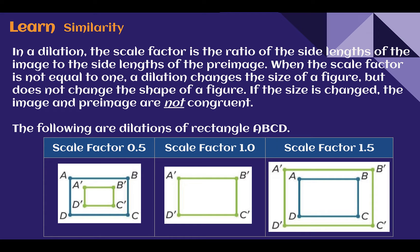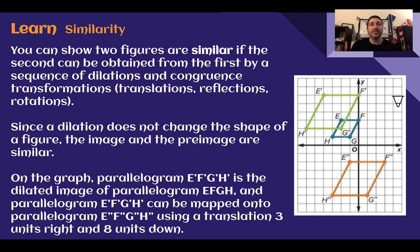The following shows some examples of dilations that we saw back in Module 8. If it has a scale factor between 0 and 1, like one half here, our image was a reduction, it got smaller. If the scale factor was exactly 1, it stayed the same size, and if our scale factor is greater than 1, we had an enlargement where the shape got larger.